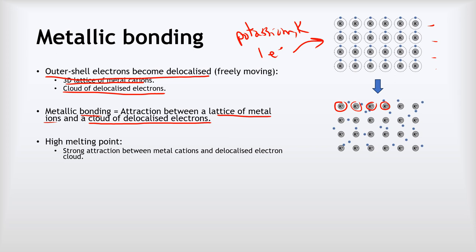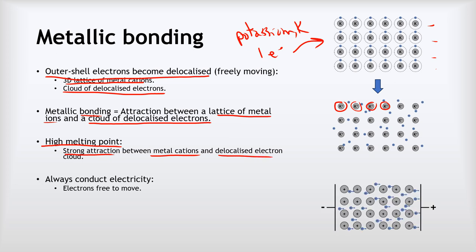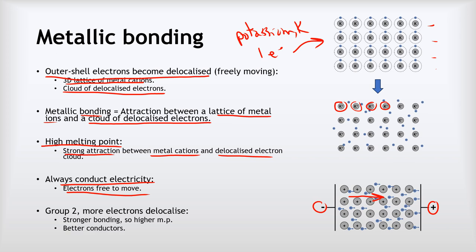This gives metals generally high melting points — not always as high as ionic compounds, but still pretty high — because of the strong attraction between the metal cations and the delocalized electron cloud. Metals always conduct electricity because the electrons are free to move. If you attach a potential difference with positive at one end and negative at the other, all those electrons drift towards the positive charge. It's also worth noting that metals in Group 2, having two electrons in their outer shells, have more electrons to delocalize, stronger bonding, higher melting points, and are better conductors.